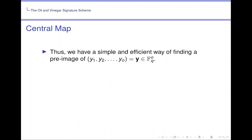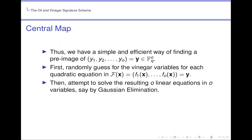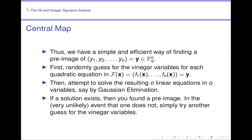Thus we have a simple and efficient way of finding a preimage of Y in F_q^o. First, randomly guess for the vinegar variables for each quadratic equation in F(x) equals Y. Then attempt to solve the resulting o linear equations in o variables, say by Gaussian elimination. If a solution exists, then you find a preimage, and in the very unlikely event that one does not, simply try another guess for the vinegar variables.